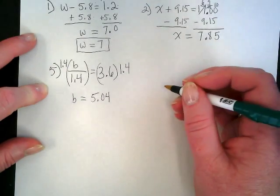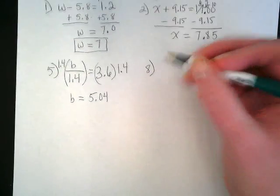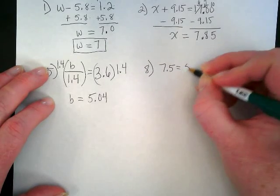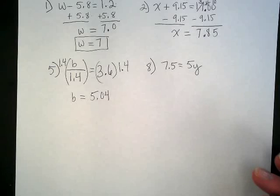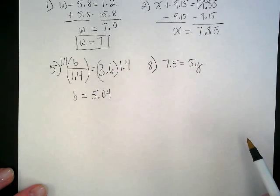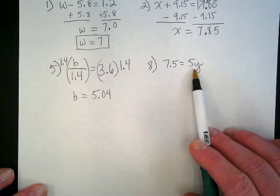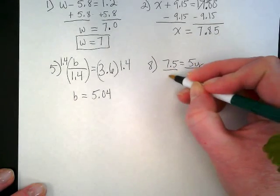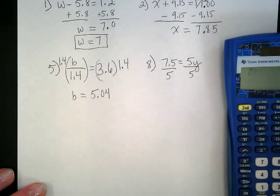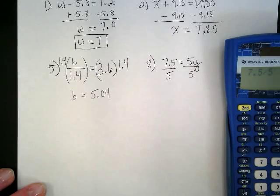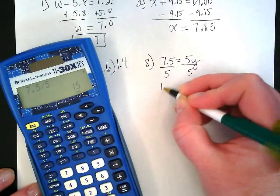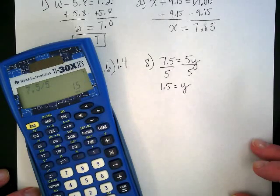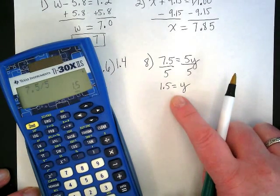Let's try another example together. I'm going to do number 8 from our book, which is 7.5 is equal to 5y. 5y is multiplication, so what are we going to do to solve? We're going to divide, and we're going to divide by the number that's with the variable. Again, go ahead and use your calculator.